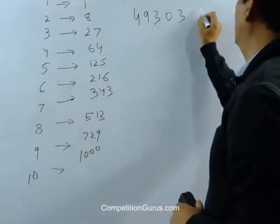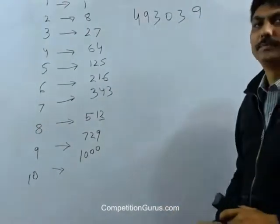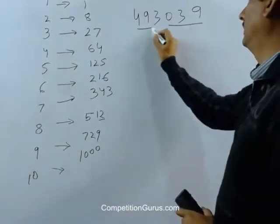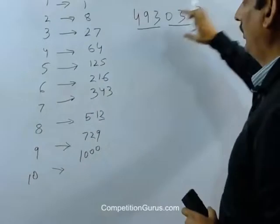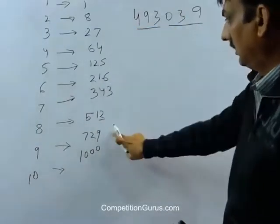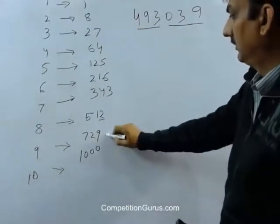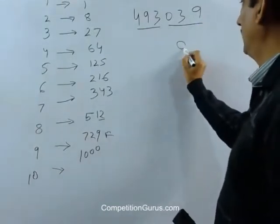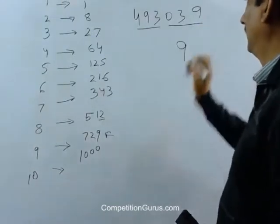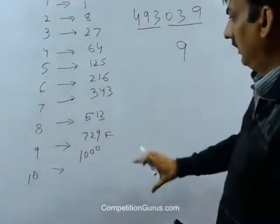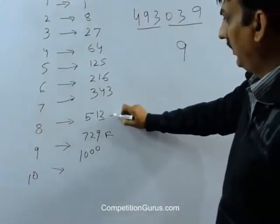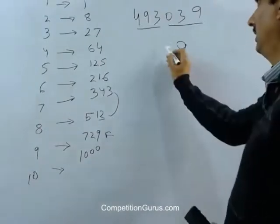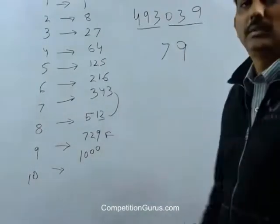493039. It is another perfect cube. Method is same. Divide into 2 parts. 9 belongs to which number here? 9. So what do I write here? I write here 9. And where does 493 fall? It falls here somewhere between 7 and 8. Which is the smaller number? Smaller is 7. 79. Done.